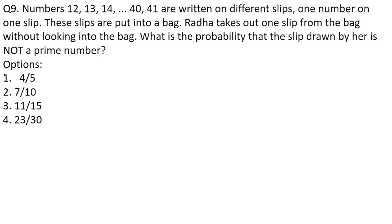The next question is homework for you. Numbers 12 to 41 are written on different slips, one number per slip, and put in a bag. Rada takes out one slip without looking. What is the probability that the slip drawn is NOT a prime number? This question is based on probability — try to solve it on your own.